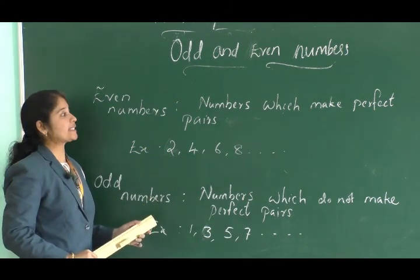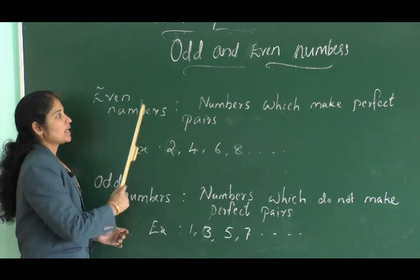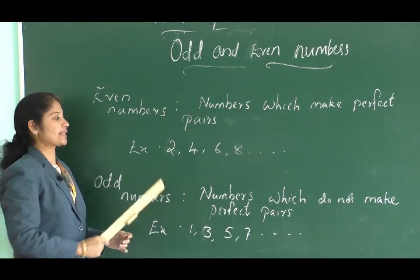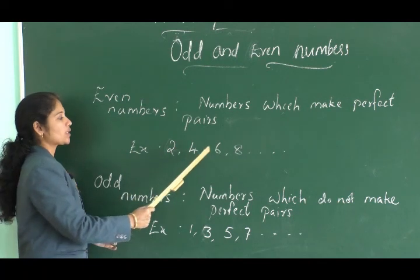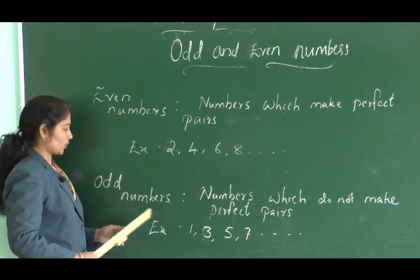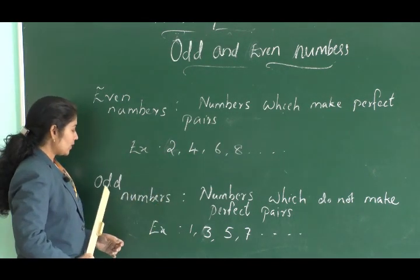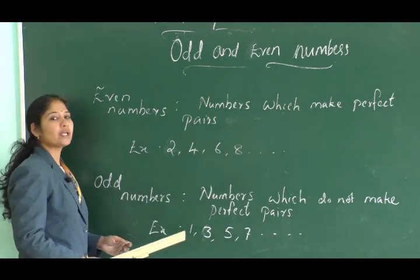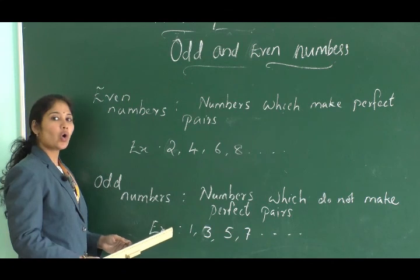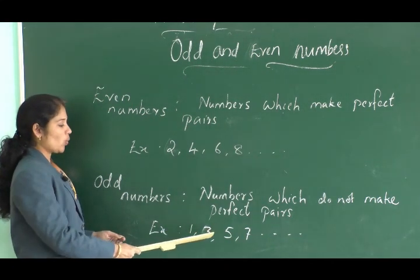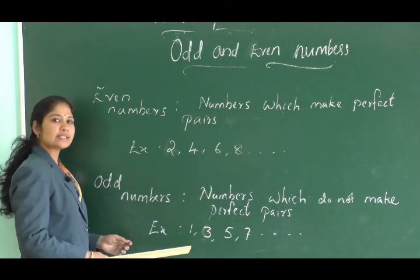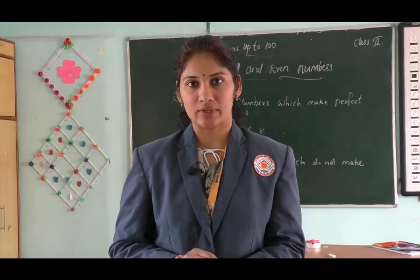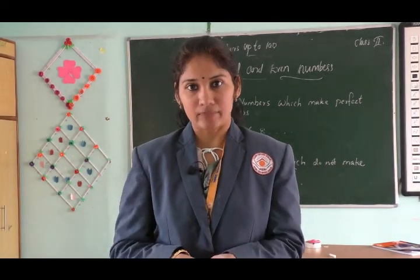Our next topic is odd and even numbers. Even numbers are numbers which make perfect pairs — for example, 2, 4, 6, 8, and so on. Odd numbers are numbers which do not make perfect pairs — for example, 1, 3, 5, 7. We will now demonstrate odd and even numbers with an example using bubbles.